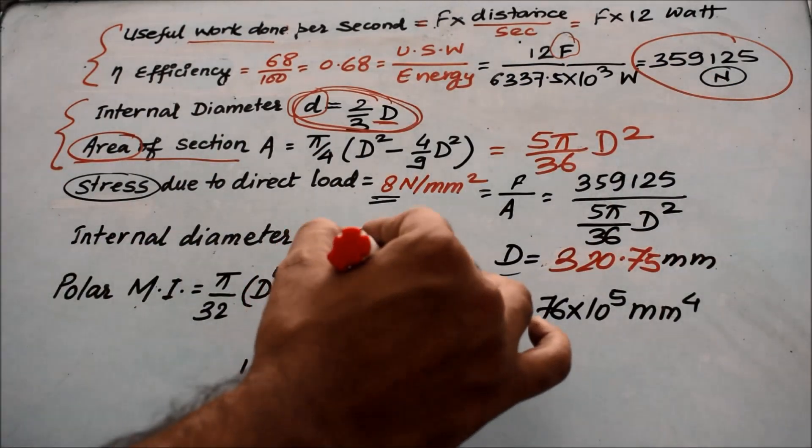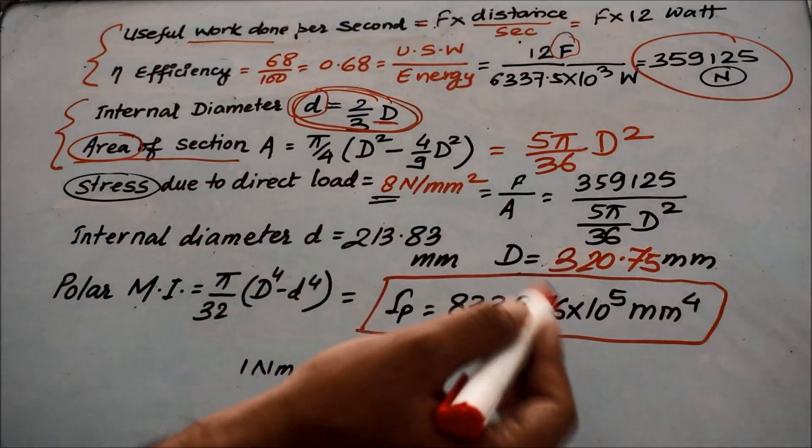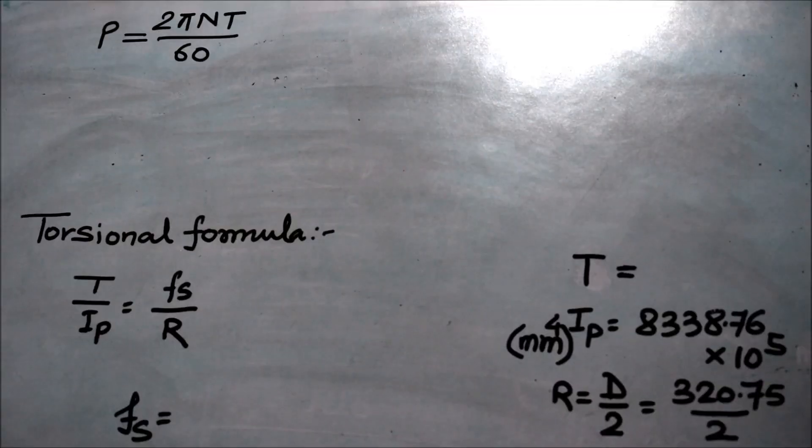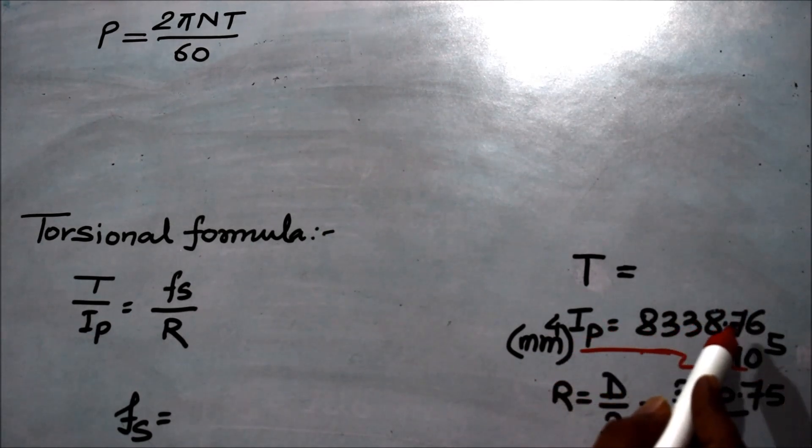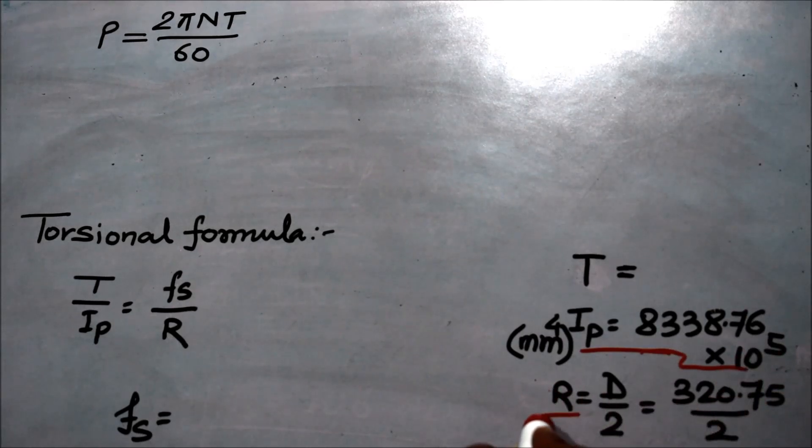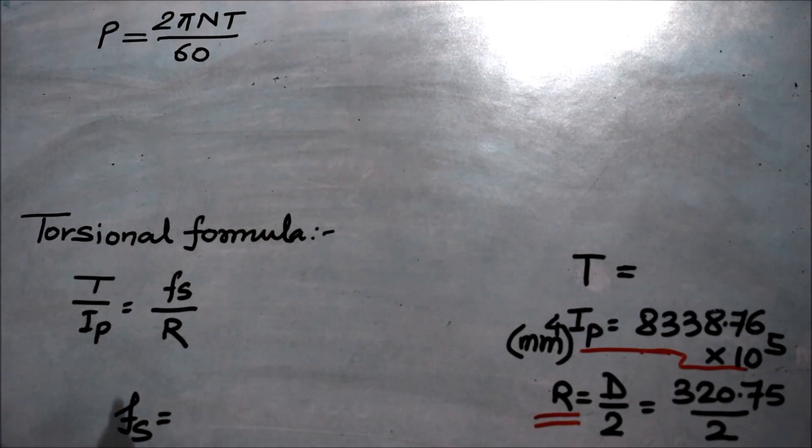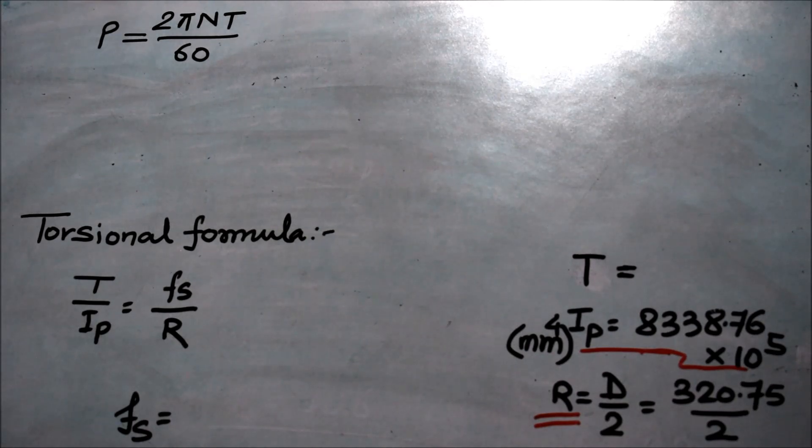As you have calculated the value of polar moment of inertia, now we are going to put all these values in the torsional formula. You all remember this torsional formula: T upon Ip equals G theta upon L, equals Fs upon R. As in this problem the angle of twist is not provided, we are using the shear stress as the condition of failure for the hollow propeller shaft.